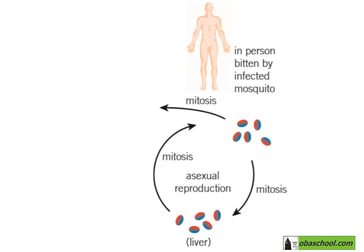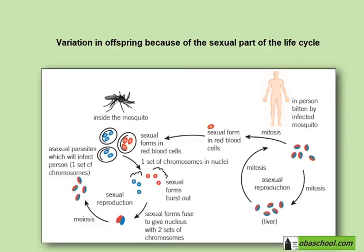Parasites show a lot of variation because they have a sexual part of their life cycle where variation is produced.